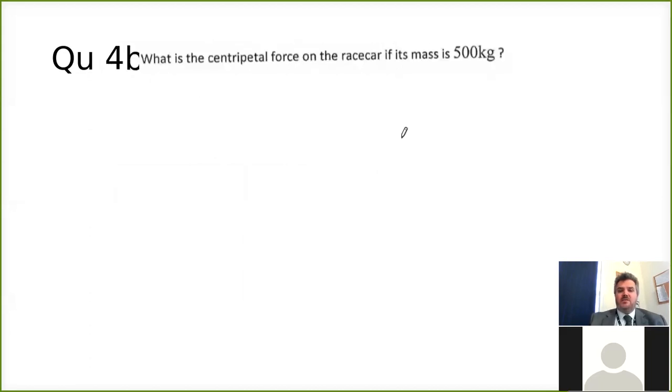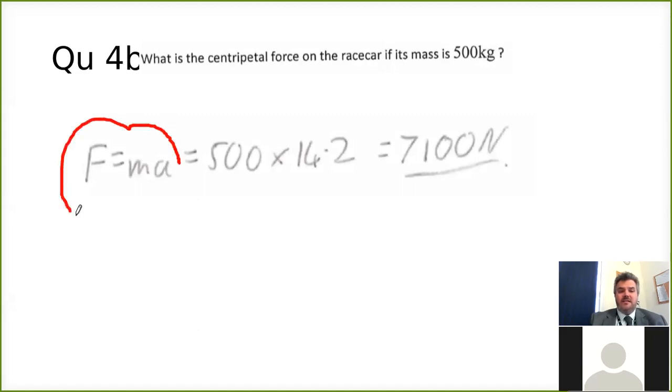Next part is to work out centripetal force on the race car if its mass is 500 kilograms. Again, you're using F equals ma, Newton's second law of motion. The mass is 500 kilograms. The acceleration is whatever you calculated in the previous question. And then you end up with the final answer of 7,100 newtons. So I hope that makes sense. Let's go on to the next one.